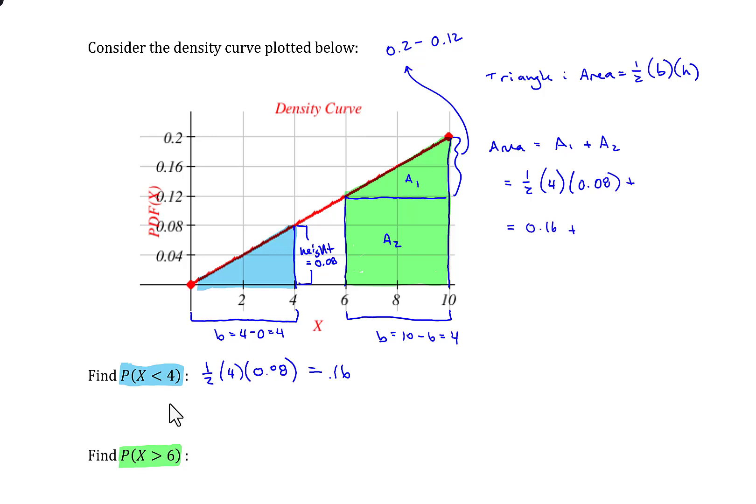But I still need to add in the area of the rectangle. The rectangle is base times height. So the base of the rectangle is 4, same as the triangle. The height of the rectangle, and I've got lines going all over the place here calculating these things. But it goes from 0.12, that's the upper bound, down to a lower bound of 0. So it's really just 0.12.